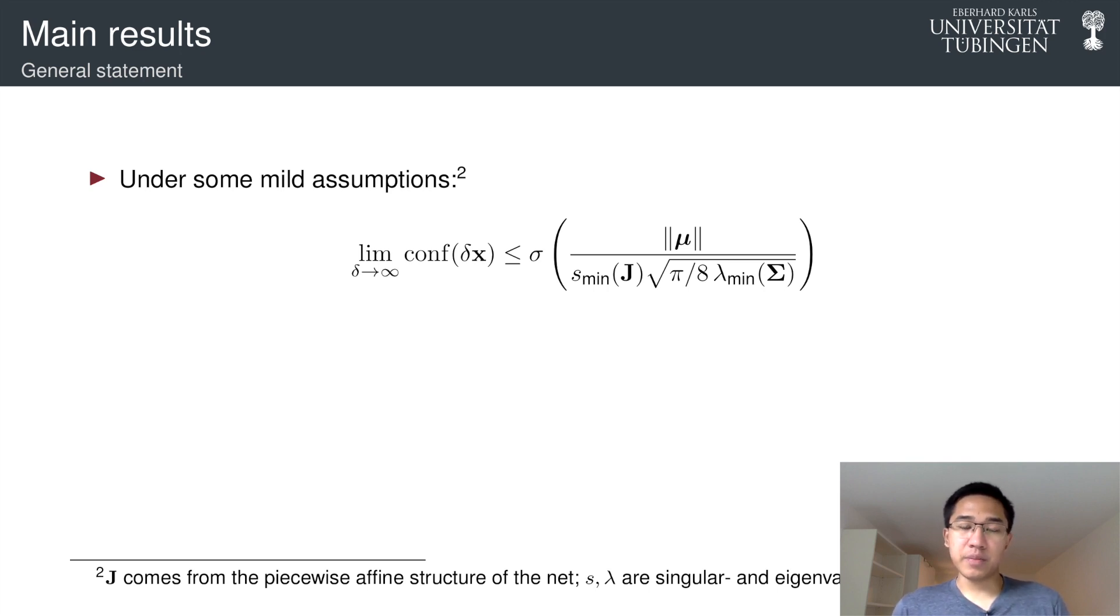And it only depends on three things. First is the mean of the distribution μ. We can think of it as a point estimate in the usual inference or in the usual training of the neural network. And we have J, which is some quantity. This is just a matrix that arises from the piecewise affine structure induced by the point estimate μ.